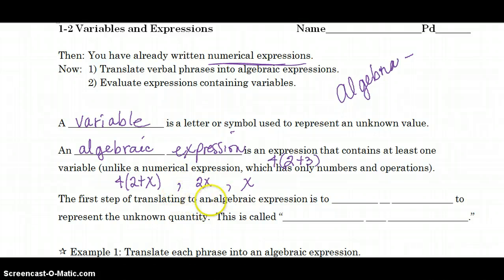So the first step of translating to an algebraic expression is to choose a variable. Okay, you have to choose the variable to represent the unknown quantity. This is called defining the variable.